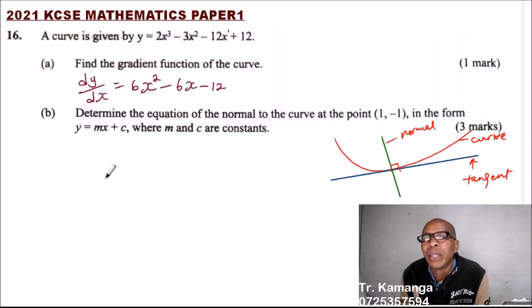Now, when you are learning about the gradient of a straight line, the relationship between two perpendicular lines: the product of their gradients, if we call this gradient one and gradient of this one gradient two. If two lines are perpendicular, the product of their gradient is equals to minus one.